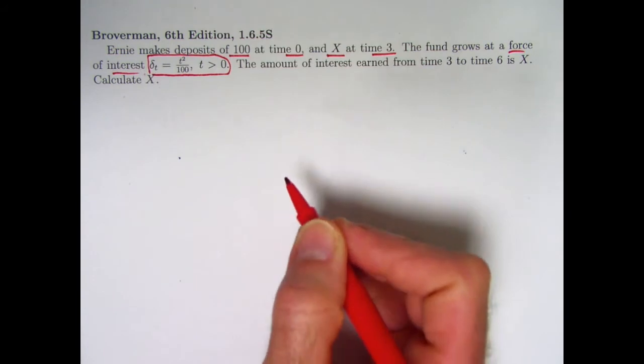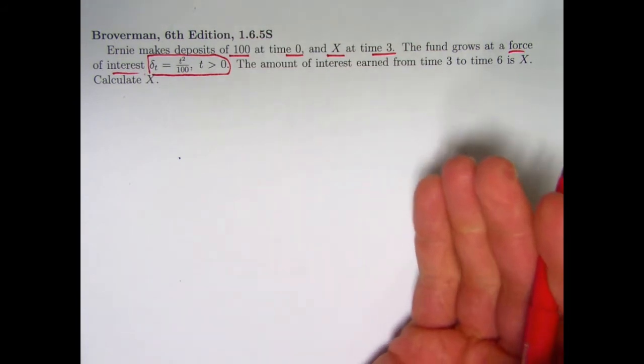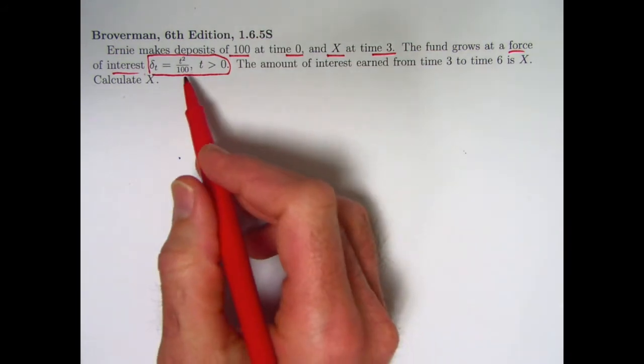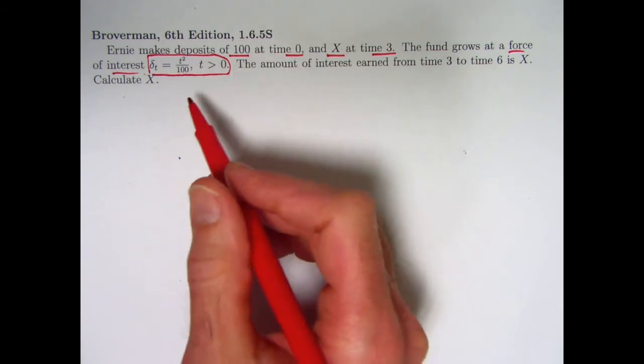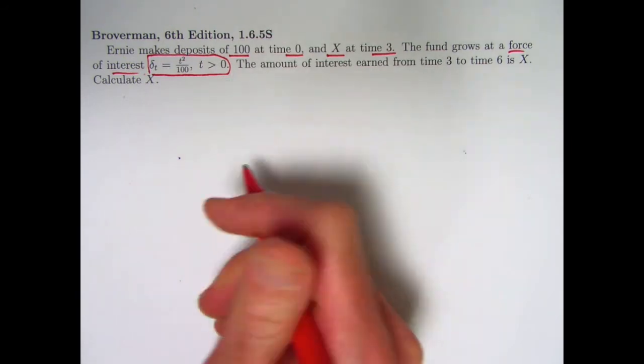It's not a constant force of interest. Constant forces of interest give you exponential growth. This is positive increasing fairly rapidly. This is definitely going to give you faster than exponential growth.